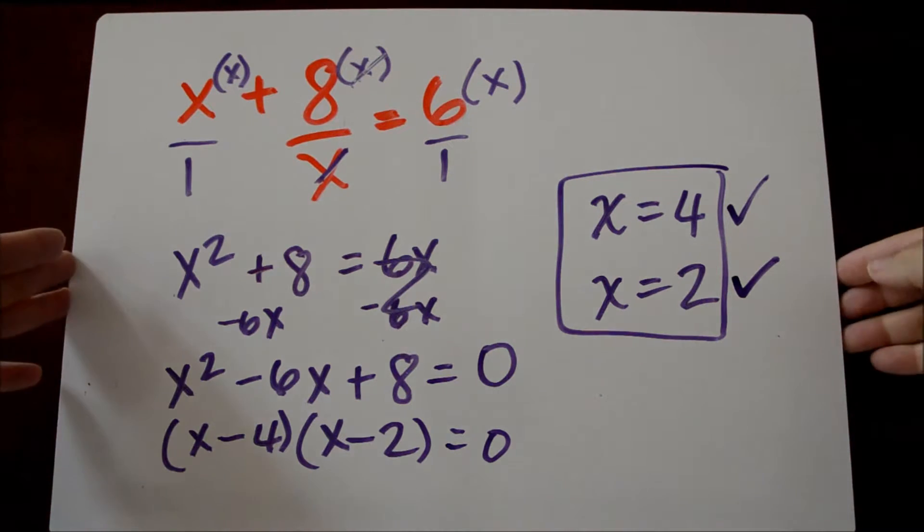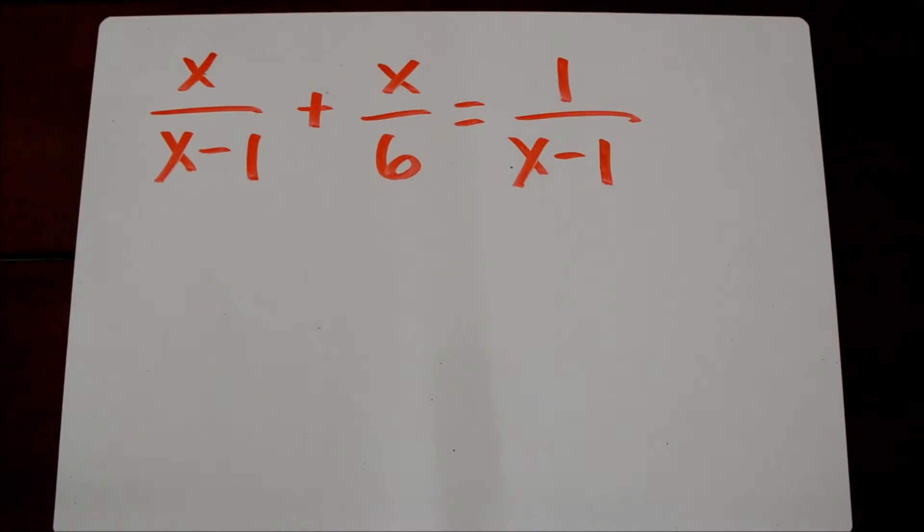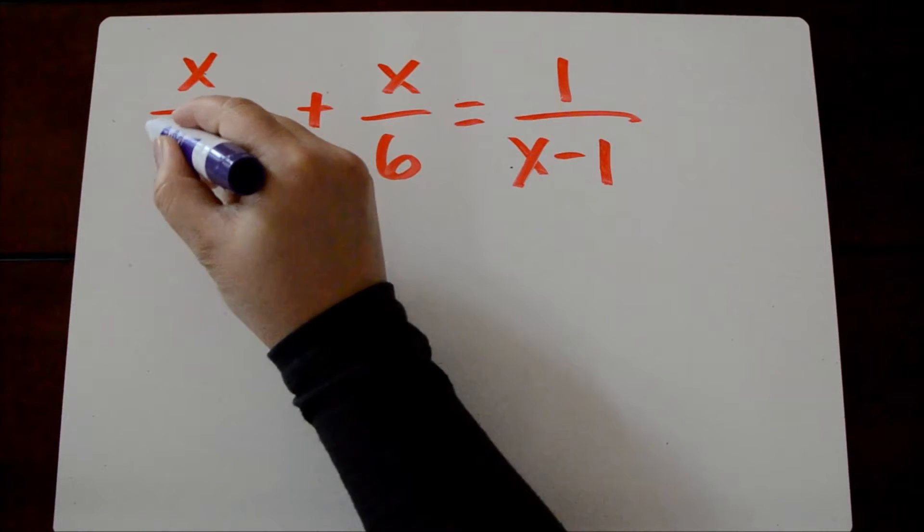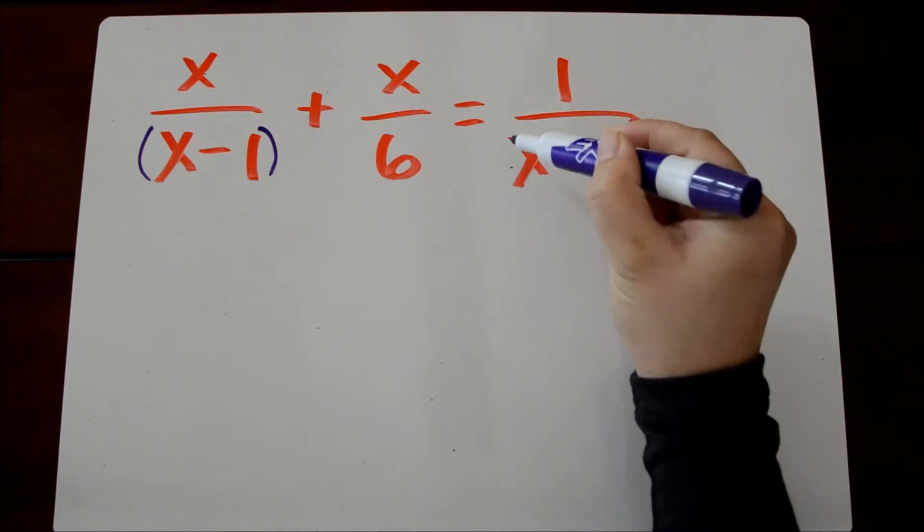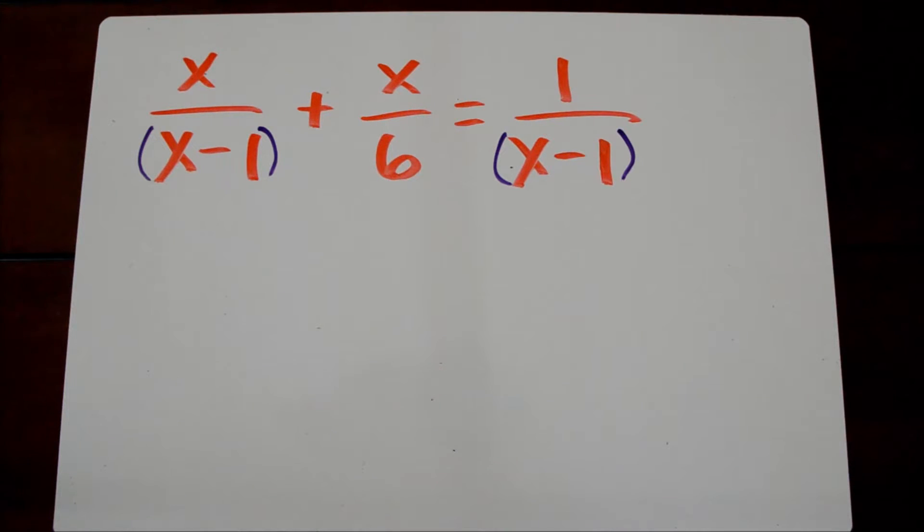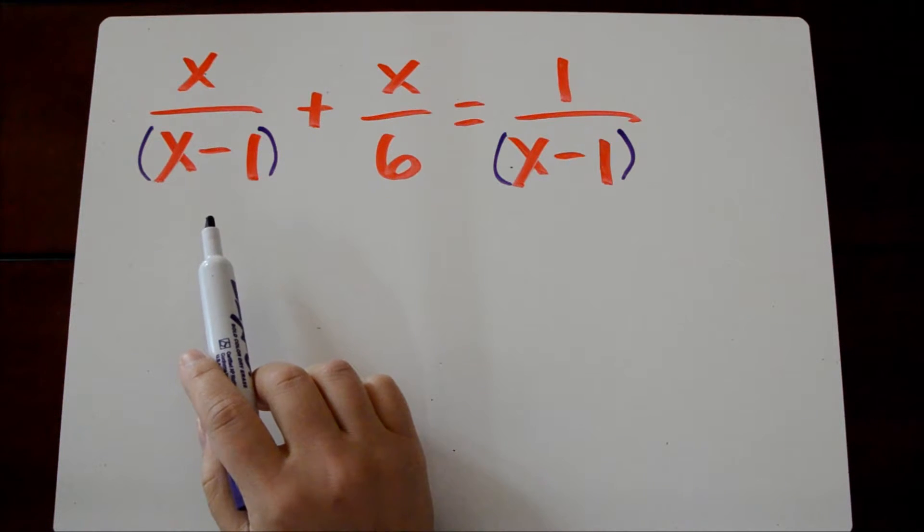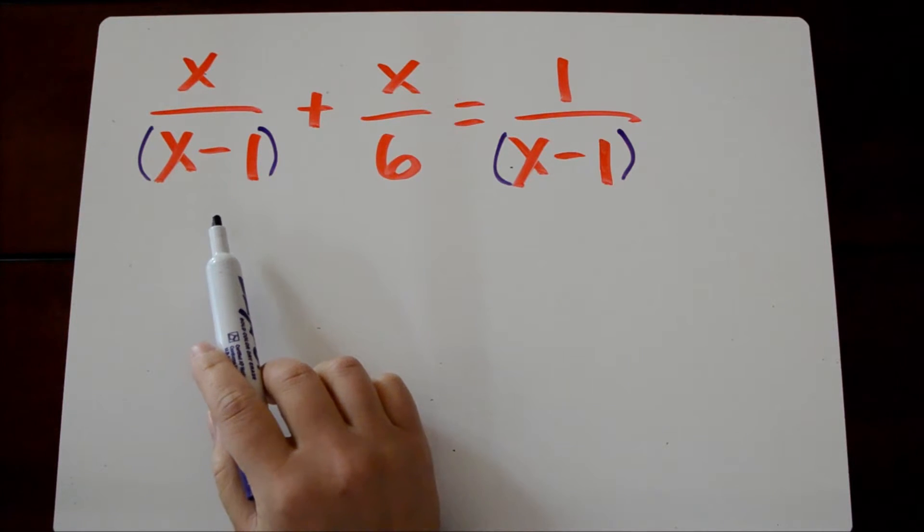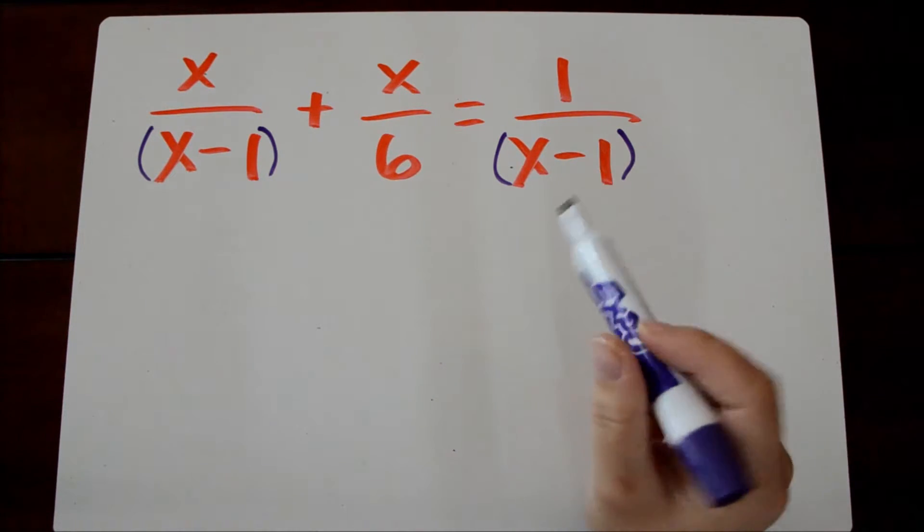Let's take a look at another example. So here we have to remember that x minus 1 is a quantity together. So I'm going to put parentheses around those. And our least common denominator is going to be 6 times x minus 1 because those don't go into each other.